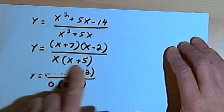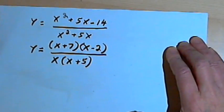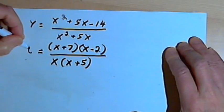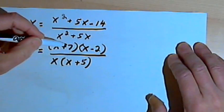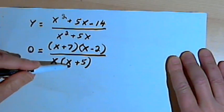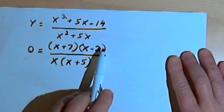Let's see if we can find some x-intercepts. So for the x-intercept, we want to set y equal to 0. So I have 0 equals x plus 7 times x minus 2 over x times x plus 5. I'm just worried about what would turn the numerator into 0.